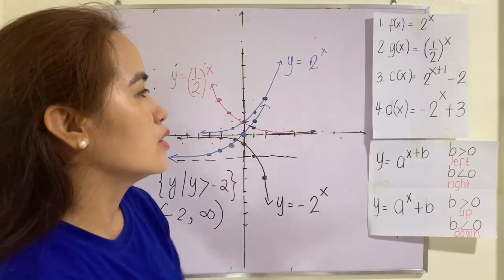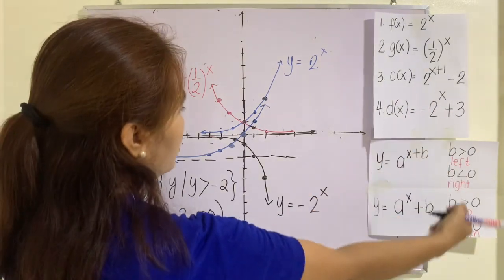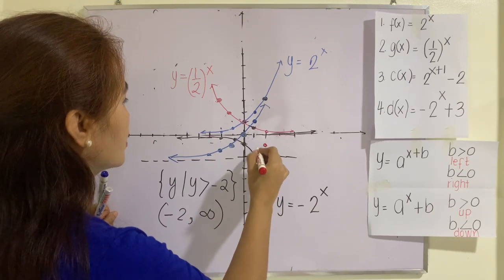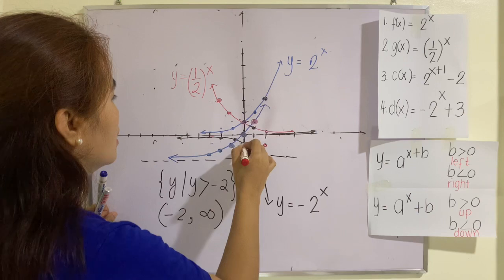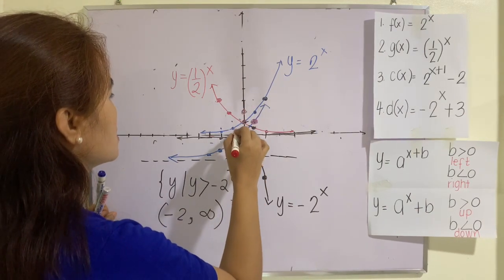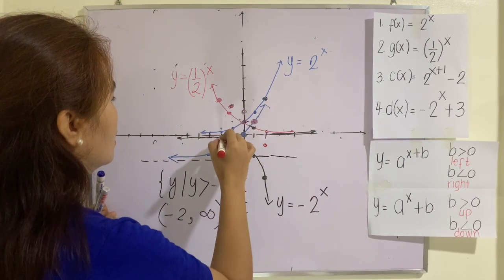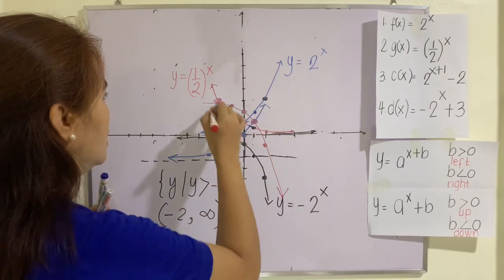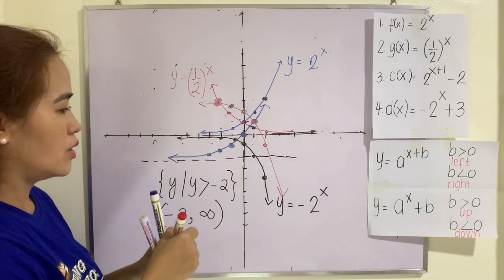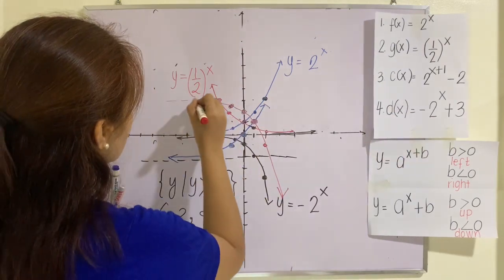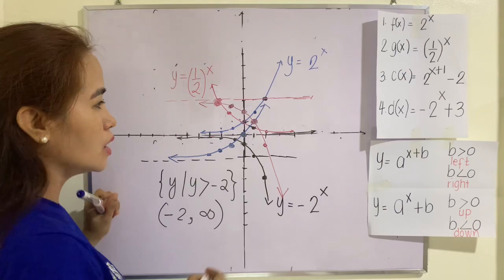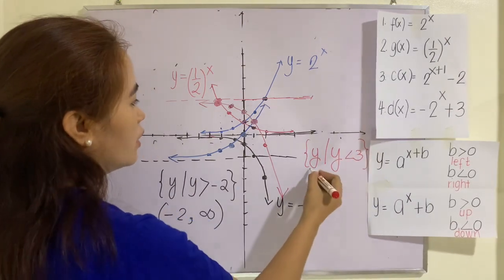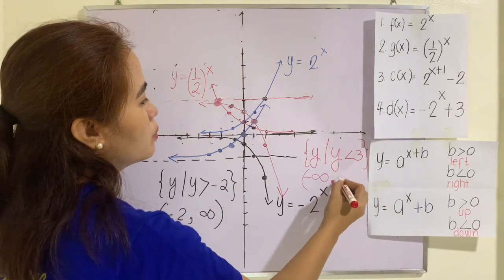What about if we have negative 2 raised to x plus 3? Plus 3 means we have to move all points up 3 units. Moving each point up 3 units. Therefore, what will be our range here? As you can see, this one is asymptotic to positive 3. So meaning to say, your range will be y such that y is less than 3. Or in interval notation, this will be negative infinity up to positive 3.